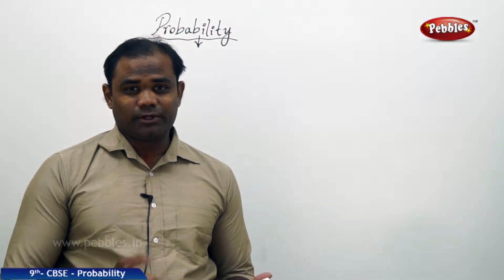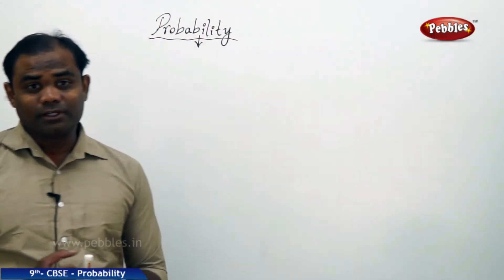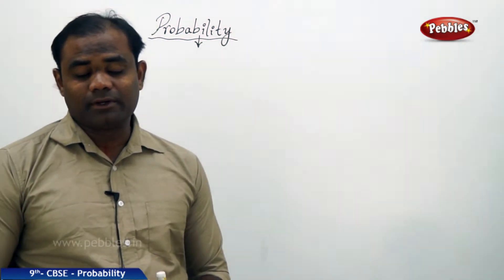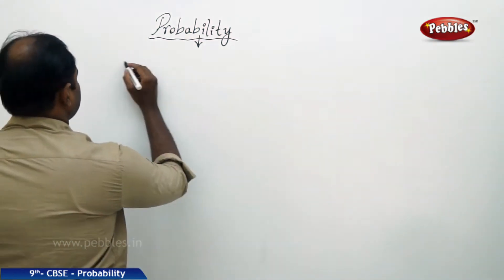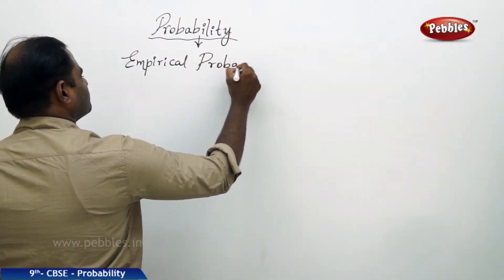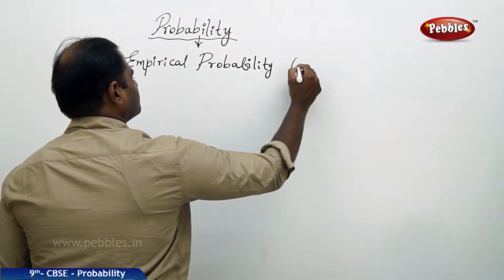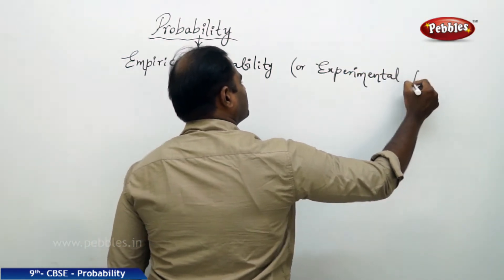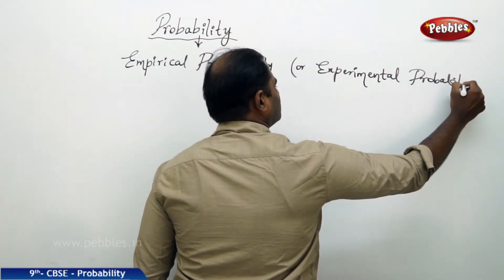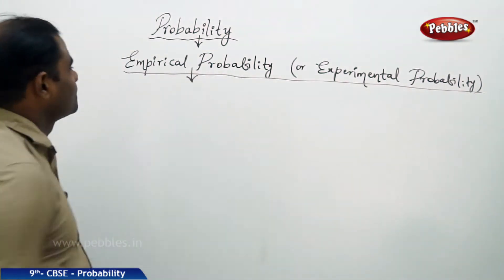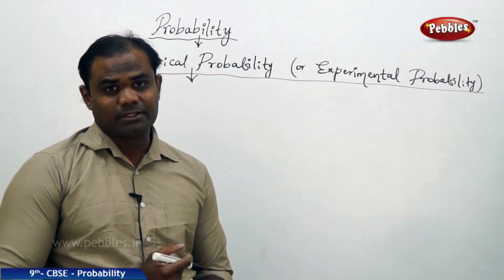Now that we have discussed about the chances of outcomes when a coin is tossed, let's enter into understanding empirical probability. This session is about empirical probability, also given by the name experimental probability. So empirical or experimental probability.